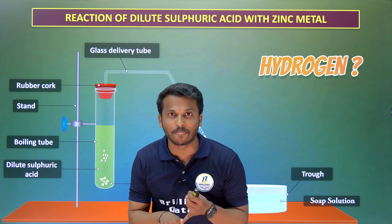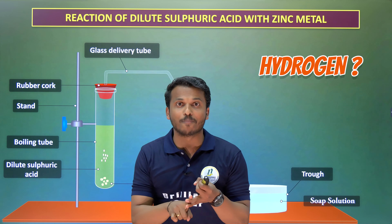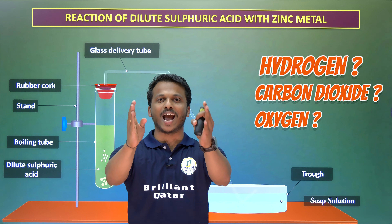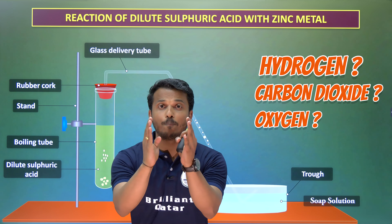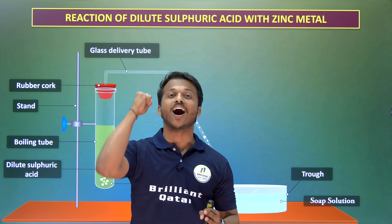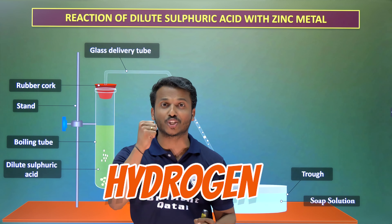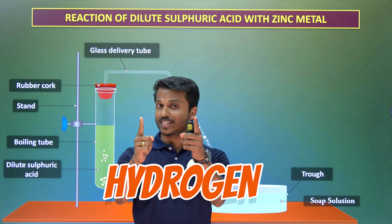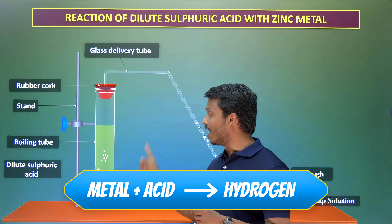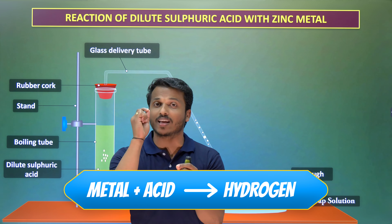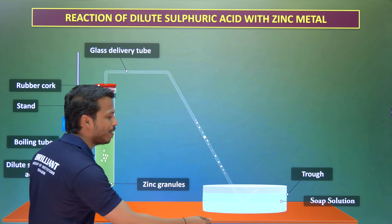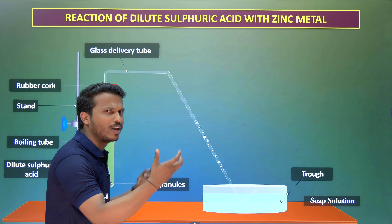When a metal reacts with an acid, is the gas hydrogen, carbon dioxide, or oxygen? The answer is hydrogen — H₂ gas is produced. So the conclusion is: when a metal reacts with an acid, you get hydrogen gas. Let me show you how to prove that the produced gas is hydrogen.